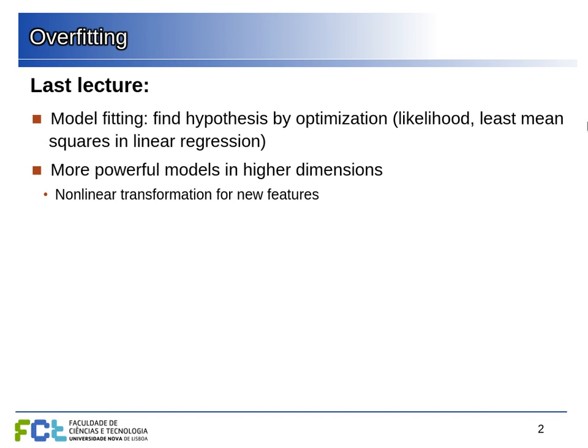In the last lecture we saw the idea of fitting the model. The model is basically a description of the hypothesis space we are considering. We describe the hypothesis space with parameters we can adjust to specify each individual hypothesis, and we find the best hypothesis — the one that best fits our data — by maximizing the likelihood of the parameters, which in linear regression turns out to be the same as minimizing the quadratic error.